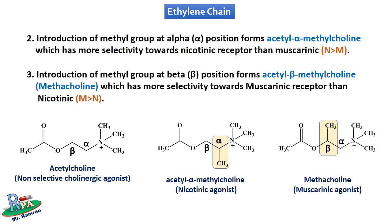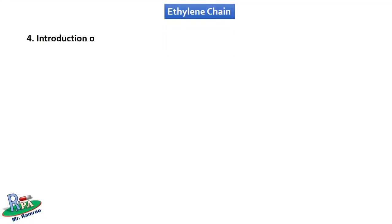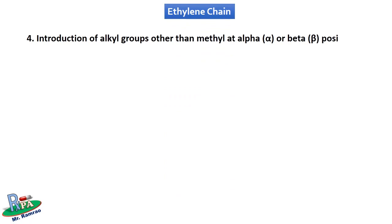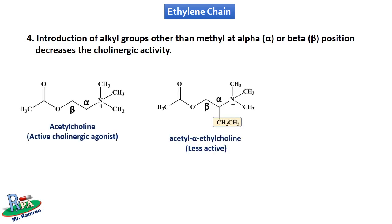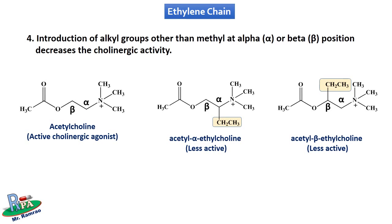However, introduction of alkyl groups other than methyl at the alpha or beta position decreases the cholinergic activity. As the length of the alkyl group at alpha or beta position increases, cholinergic activity decreases, and maximum activity is achieved with the methyl group.